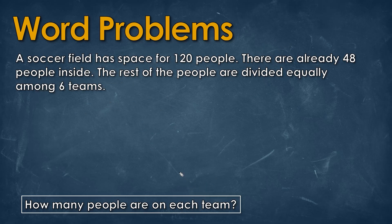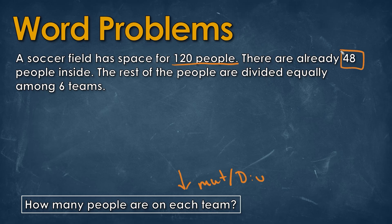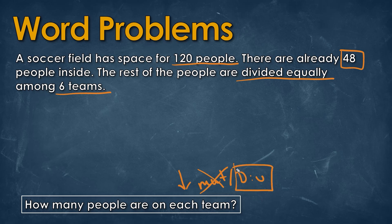The next problem asks how many people are left on each team. The word 'each' could mean multiply or divide, so we read the question to find out. There is space for 120 people and already 48 inside. The rest are divided equally among six teams, so we know we'll be dividing. The first step will actually be subtraction: 120 minus 48.